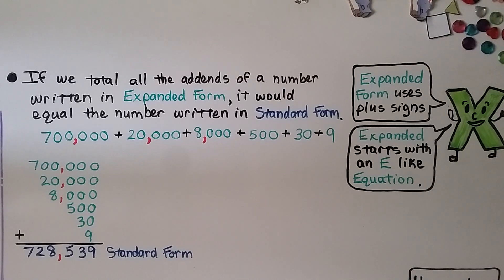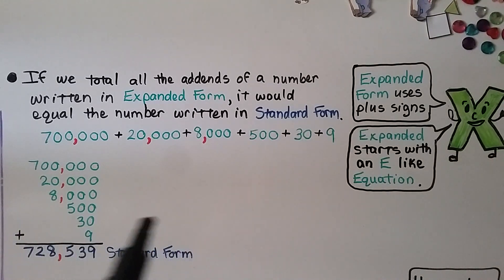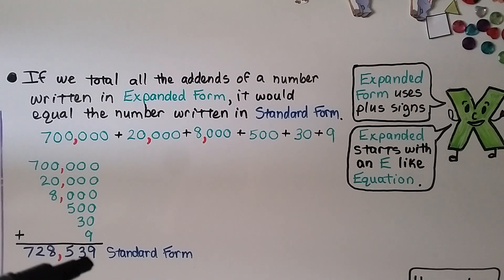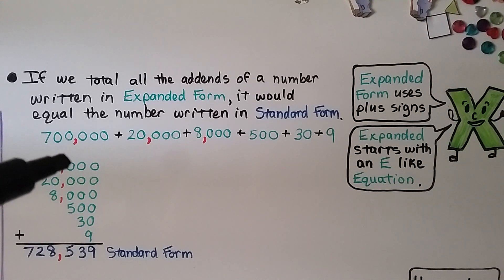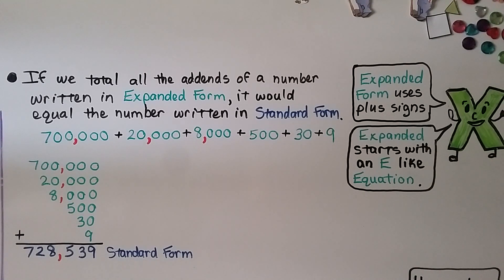If we total all the addends of a number written in expanded form, it equals the number in standard form. We have 700,000 plus 20,000 plus 8,000 plus 500 plus 30 plus 9. Starting in the ones place: 9; tens place: 3; hundreds place: 5; thousands place: 8; ten thousands place: 2; hundred thousands place: 7. So when we total all the addends of expanded form, it equals the number in standard form: 728,539.